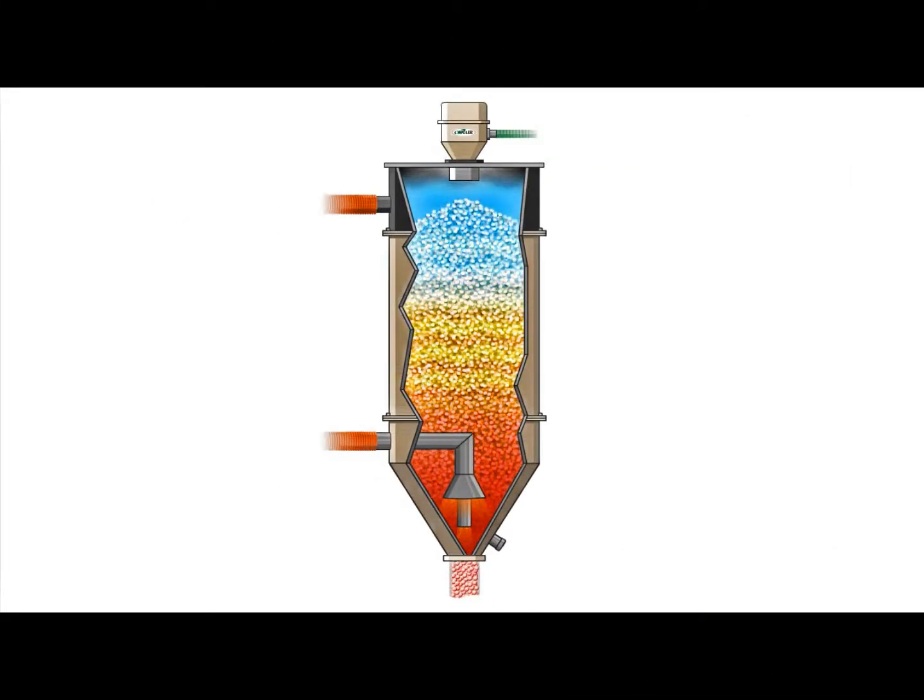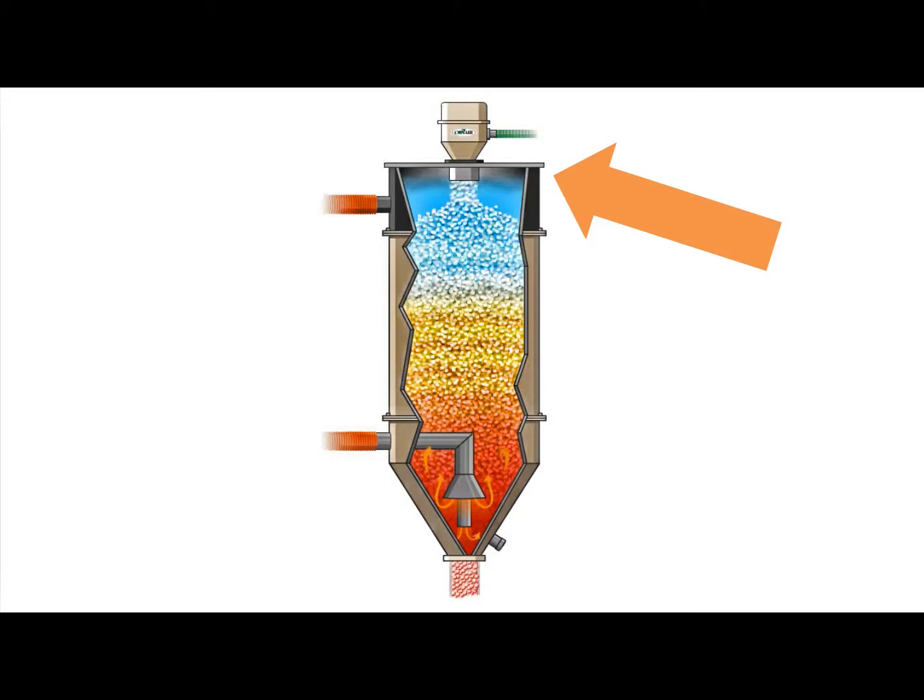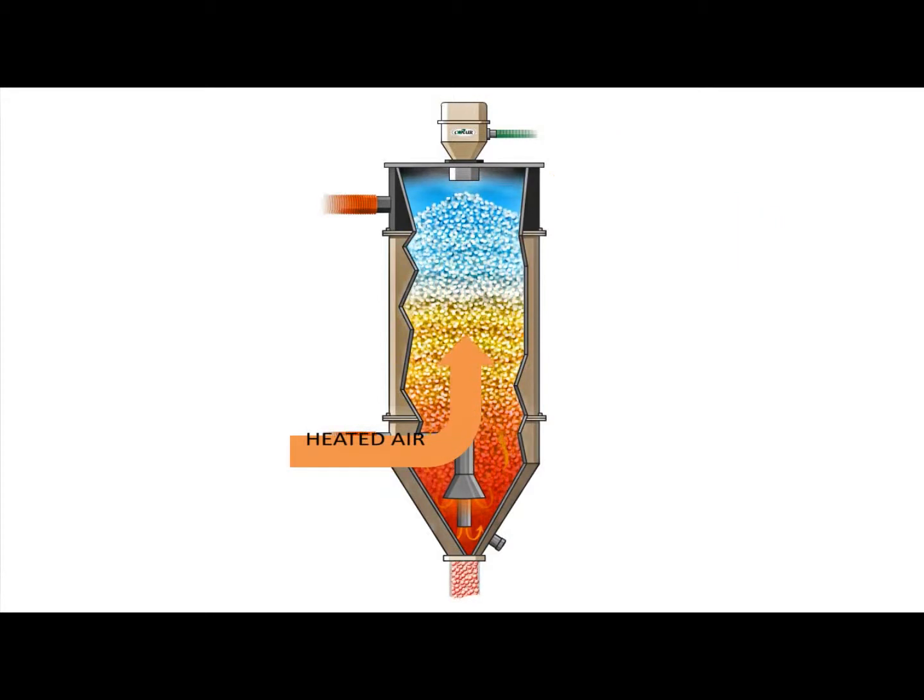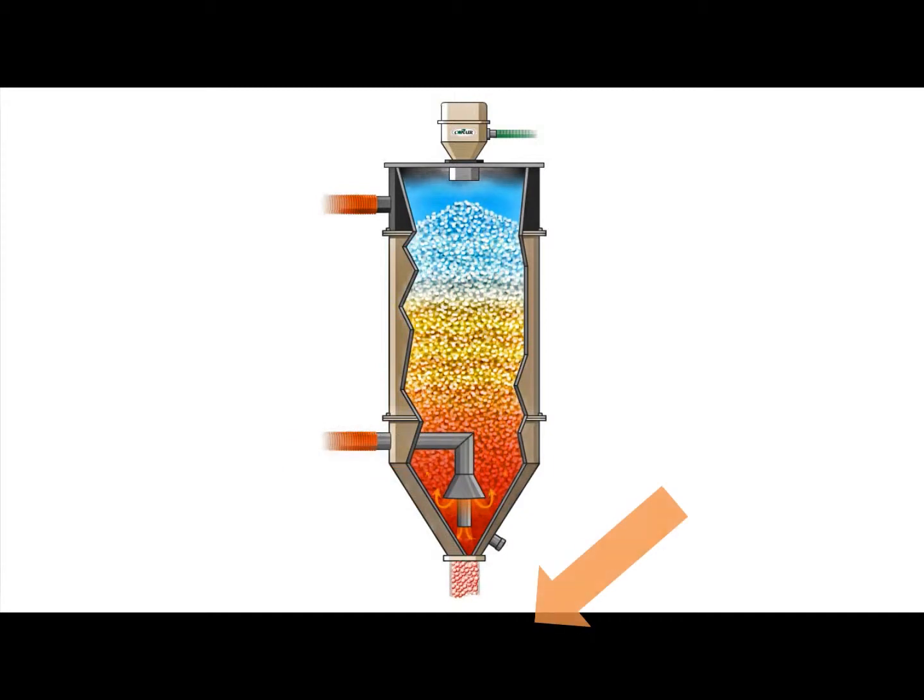In drying, cold material is loaded into the top of a drying hopper and while dry heated air is circulated through it for several hours, hot material flows out the bottom.